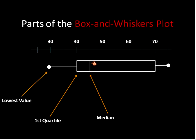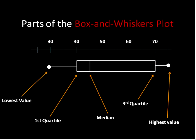That's the median right there — the number that falls right in the very center when the numbers are placed in order. The third quartile is indicated by this upright line, and then the highest value is the whisker off to the side. This is the box, and these are the whiskers, hence the name.